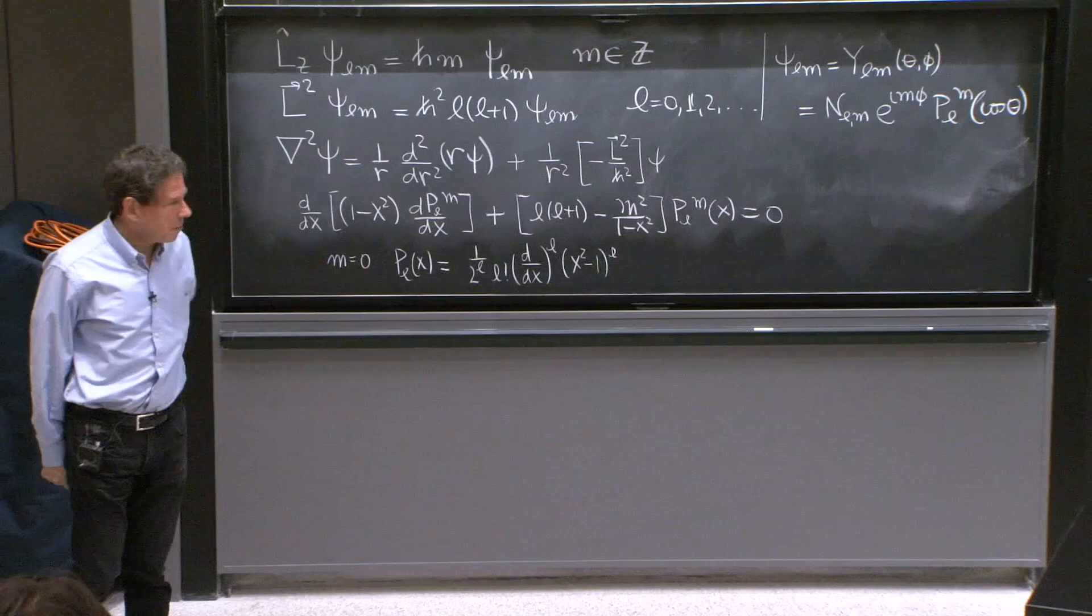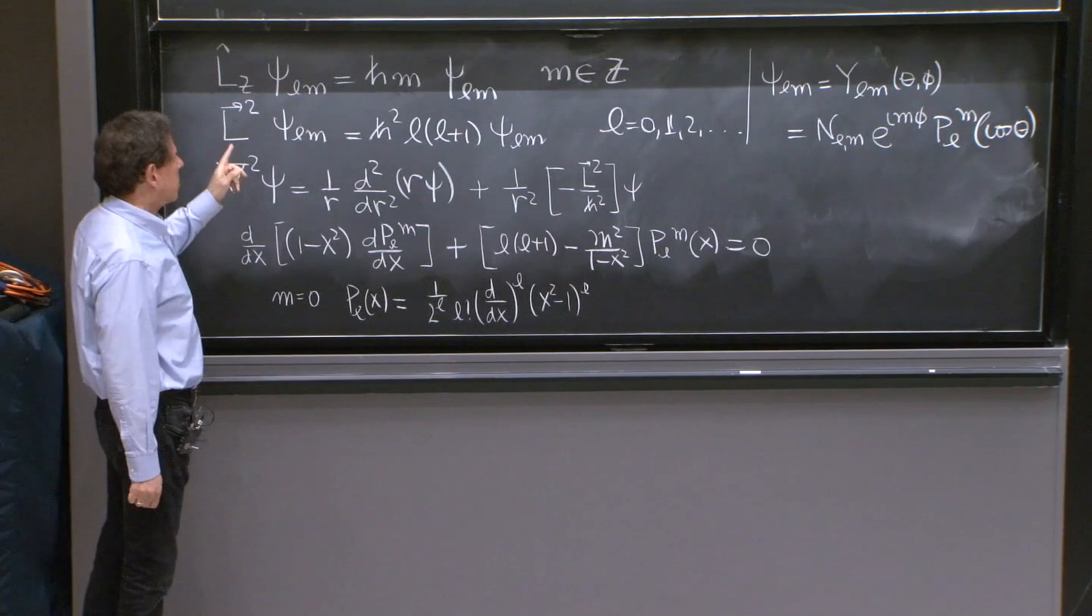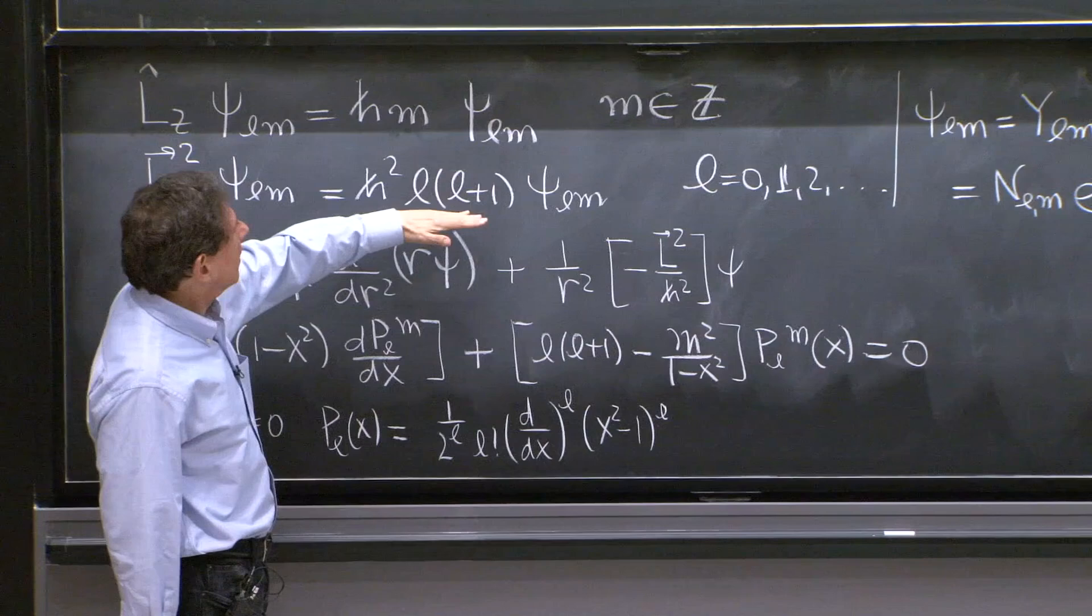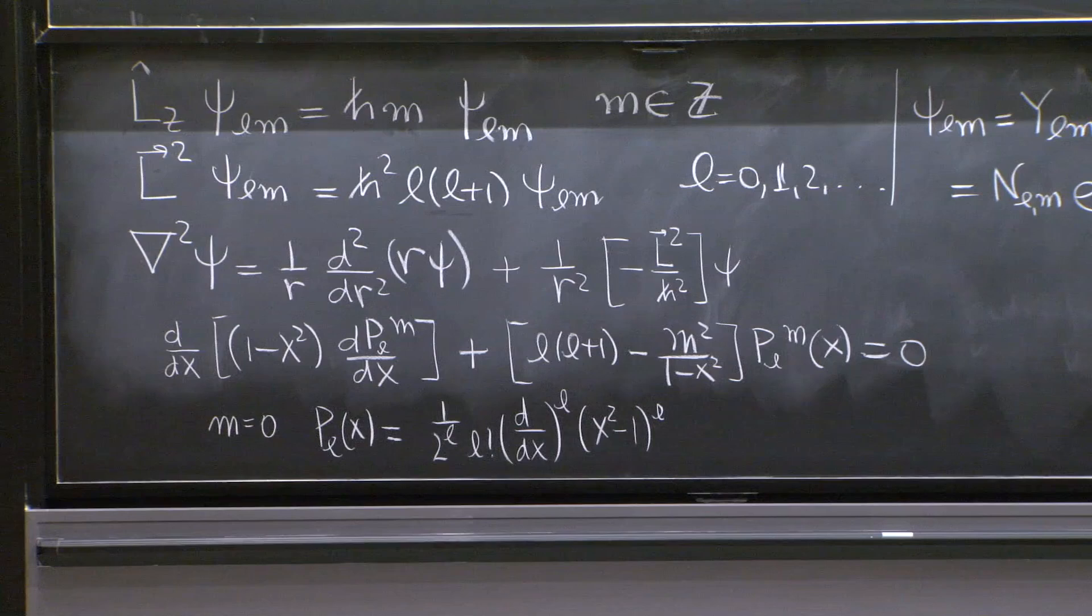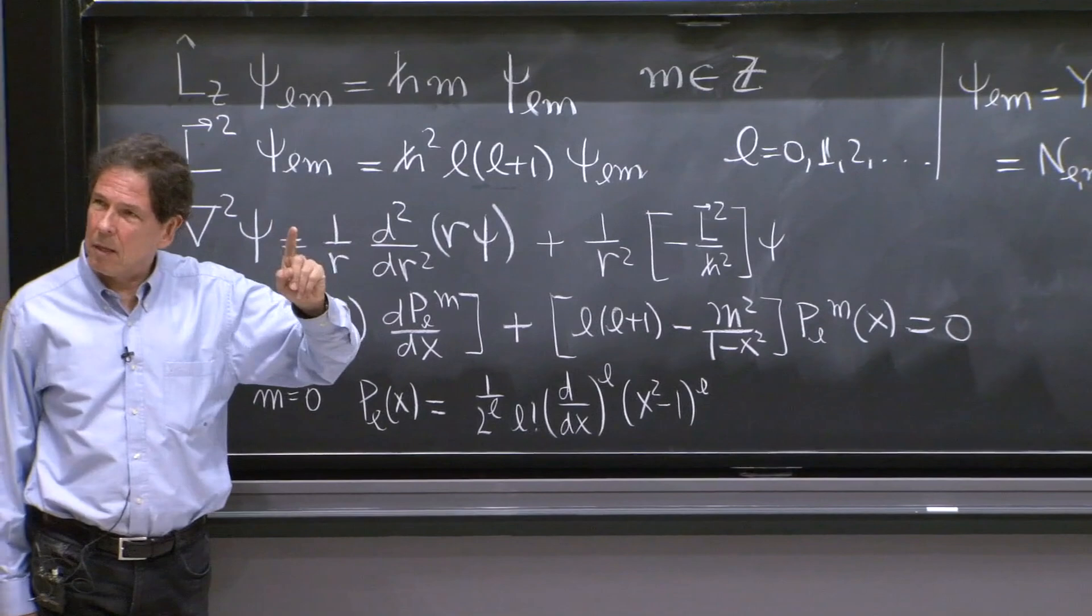For the L squared operator, we also explained that the eigenvalue of this operator should be positive. That is achieved when L, whatever it is, is greater or equal than 0. And the discussion that led to the quantization of L was a little longer, took a bit more work.